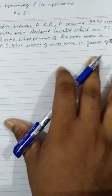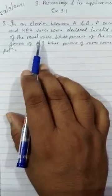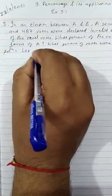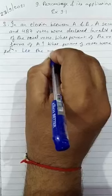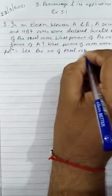As it is written here that invalid votes are 2% of the total votes, we can take total votes as X. Let the number of total votes be X.